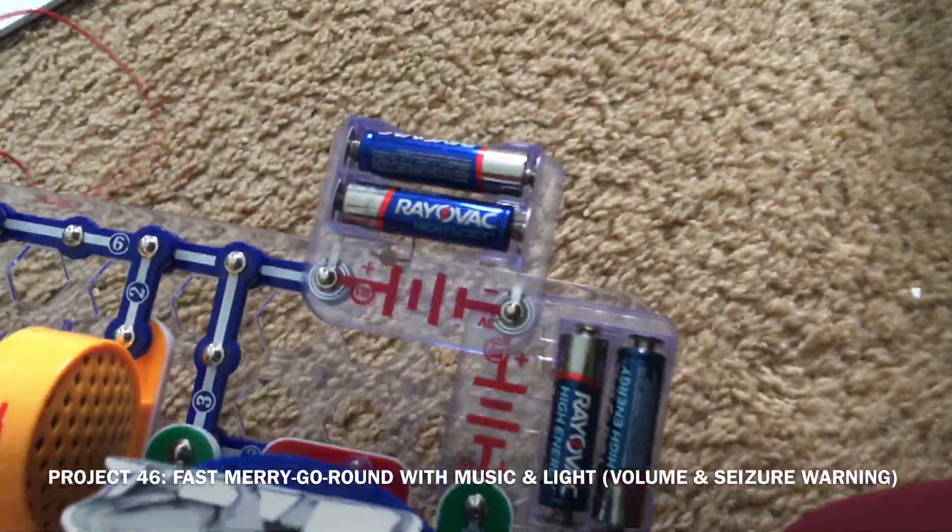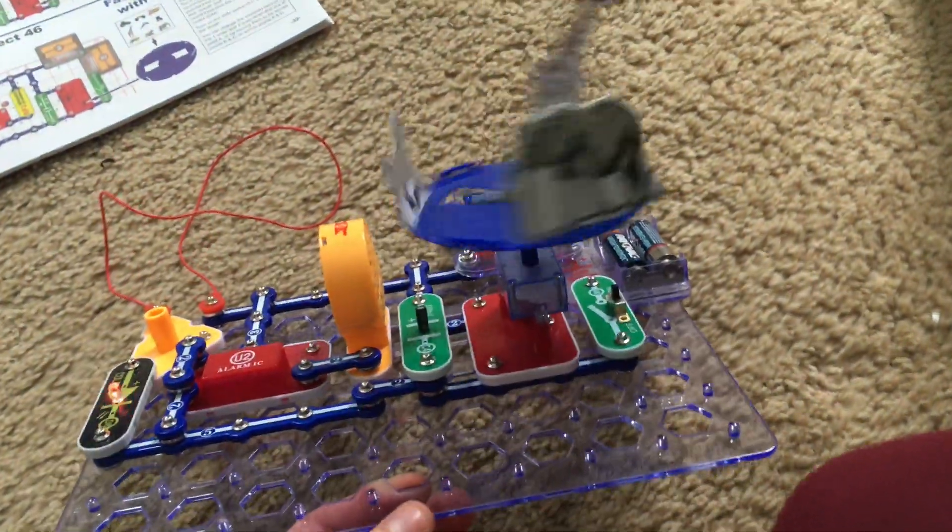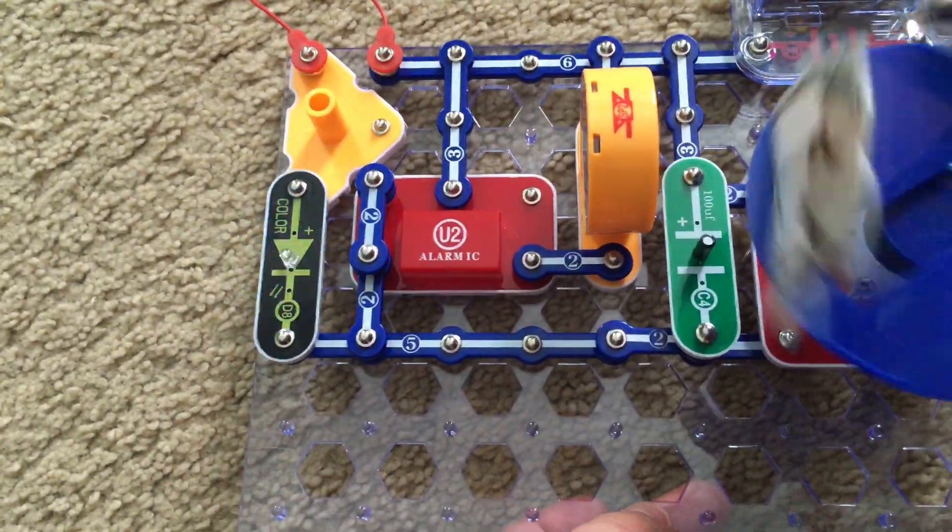By adding another battery holder to the circuit, the merry-go-round spins faster and it is also much louder. The color LED seems brighter too.